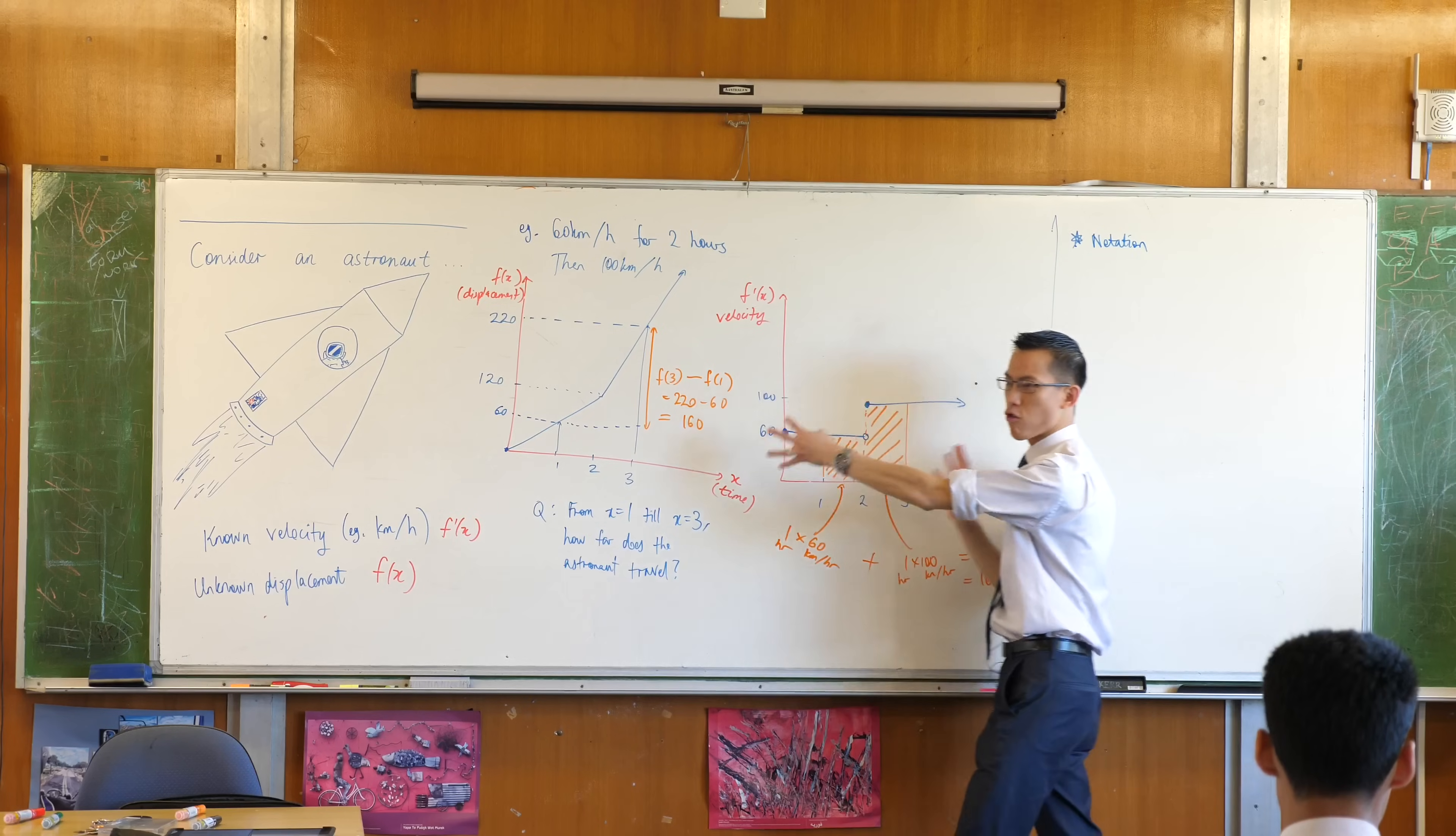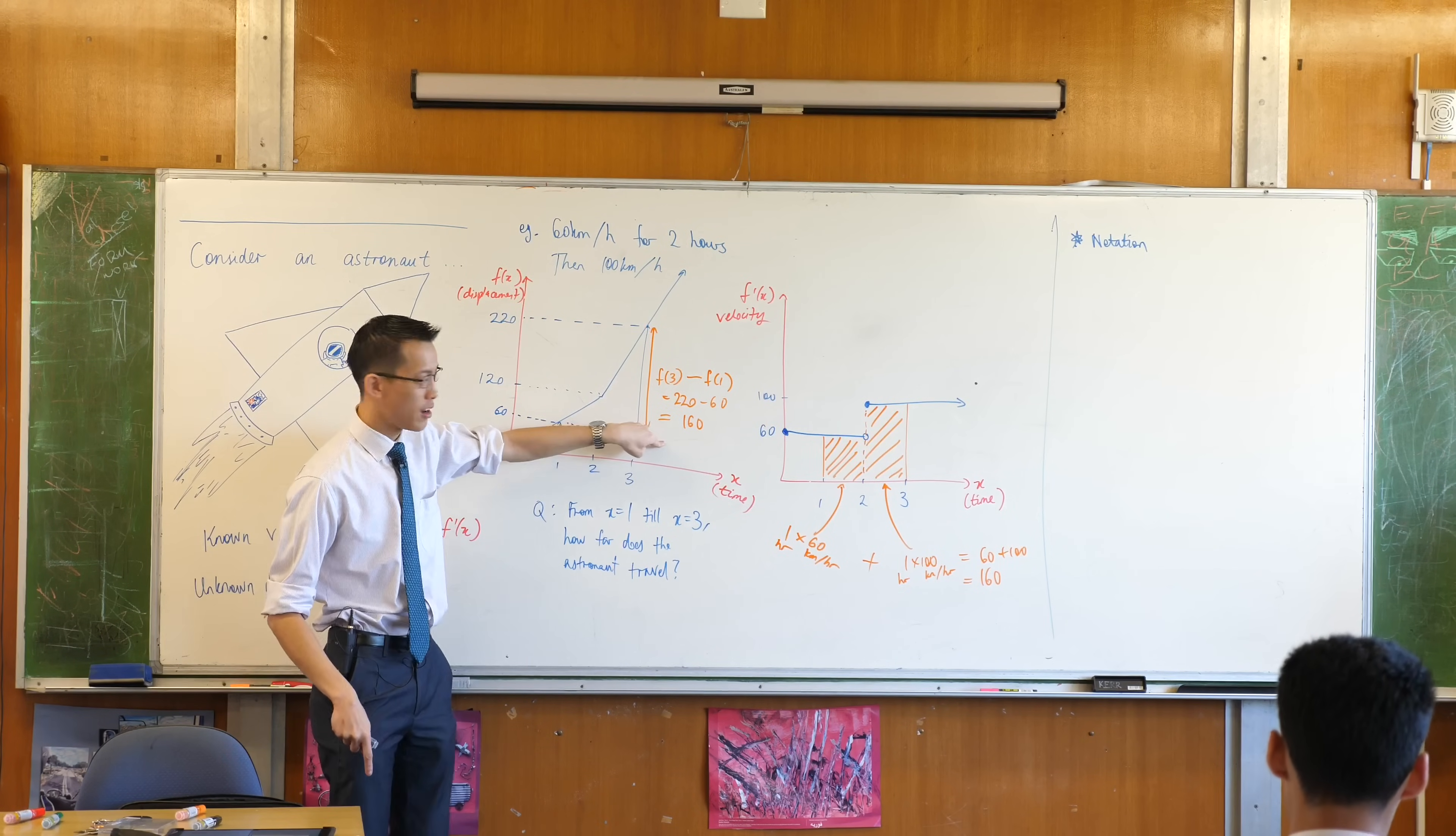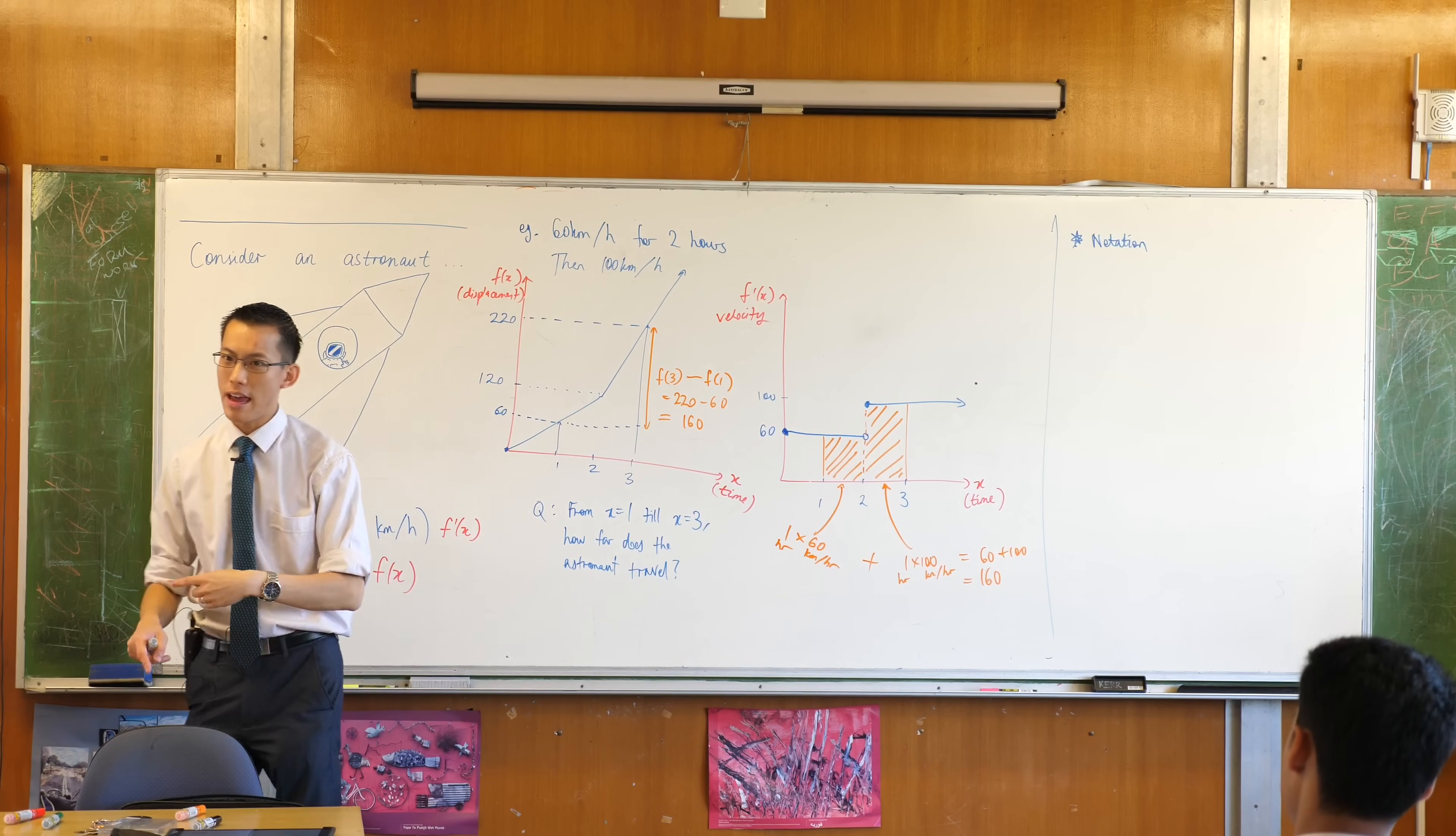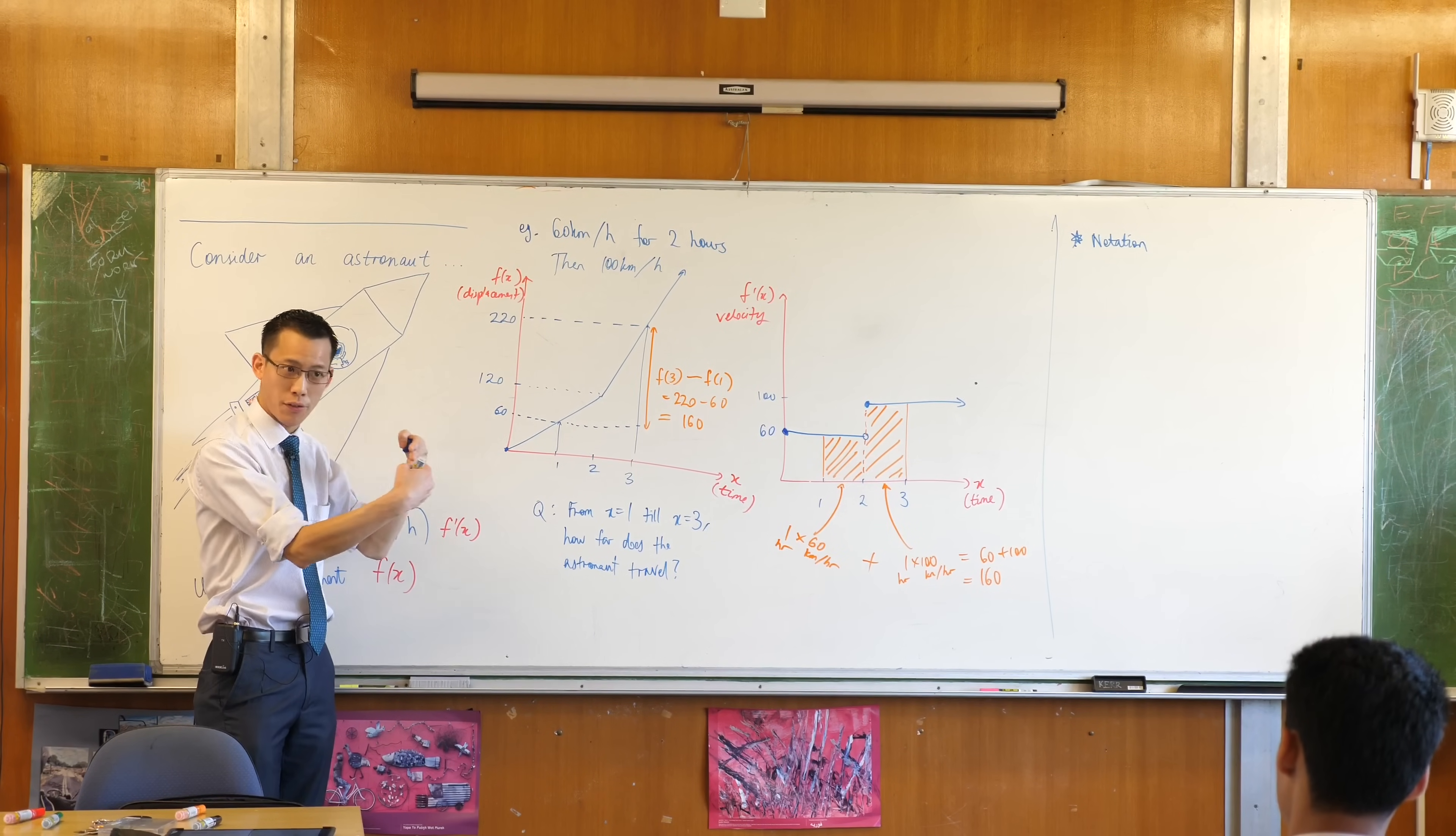We are saying that these two problems are two perspectives on the same problem. If you can work out this total change here, you can work out this area, right? Without having to draw the area. Which means, vice versa, if I can work out the area, then I can work out the total change. You're solving the same problem from just two different angles.